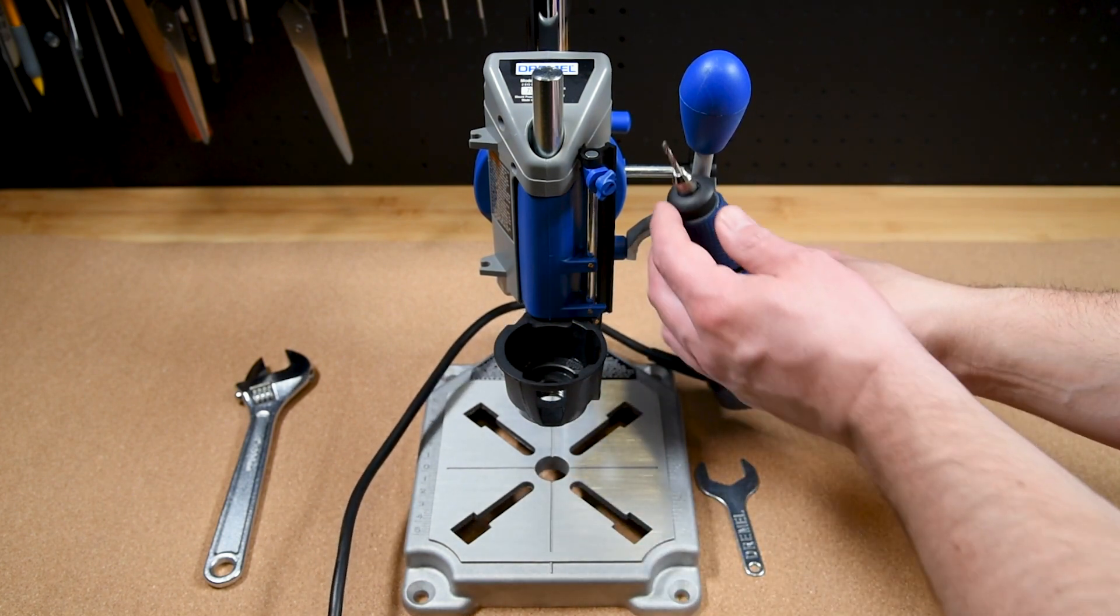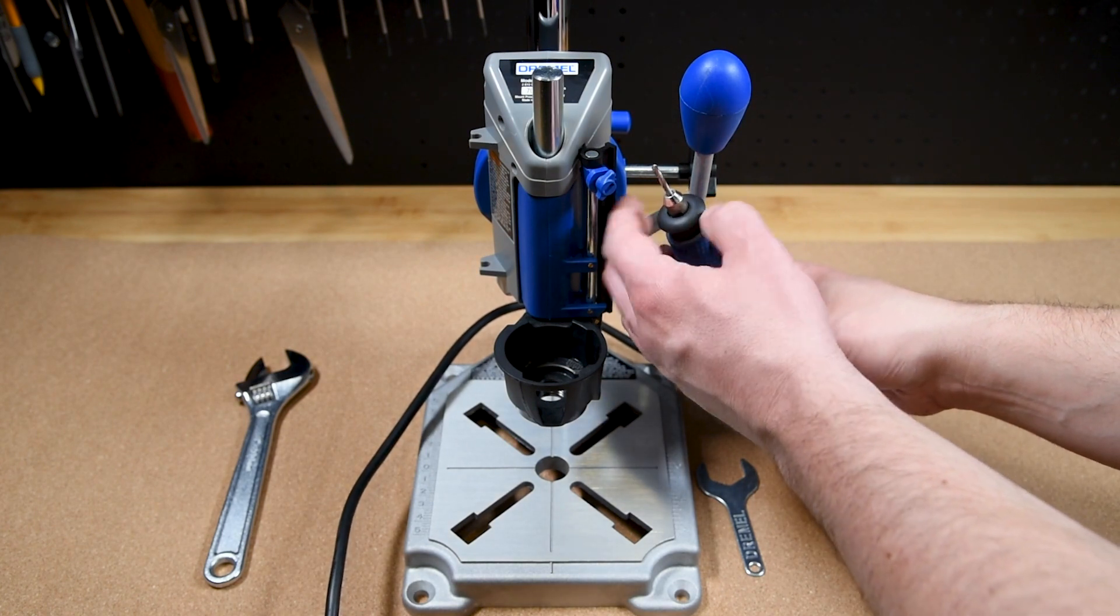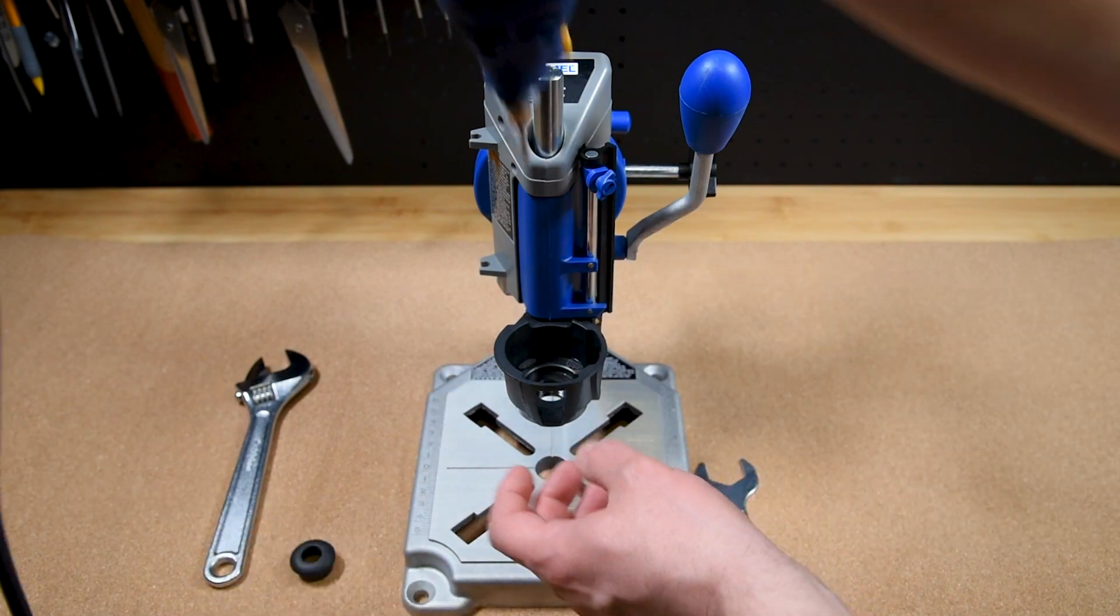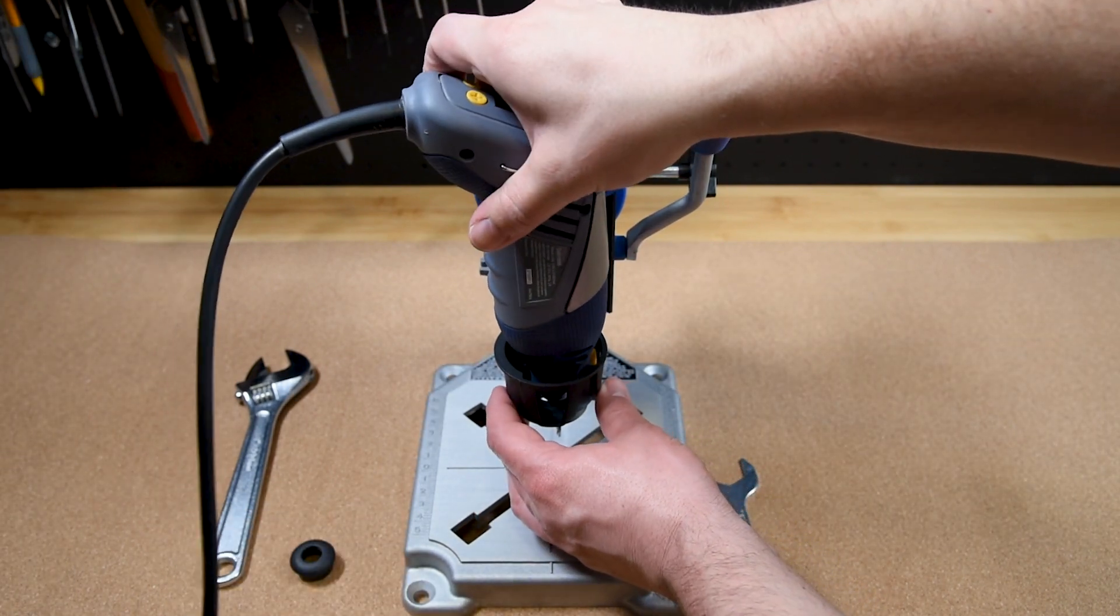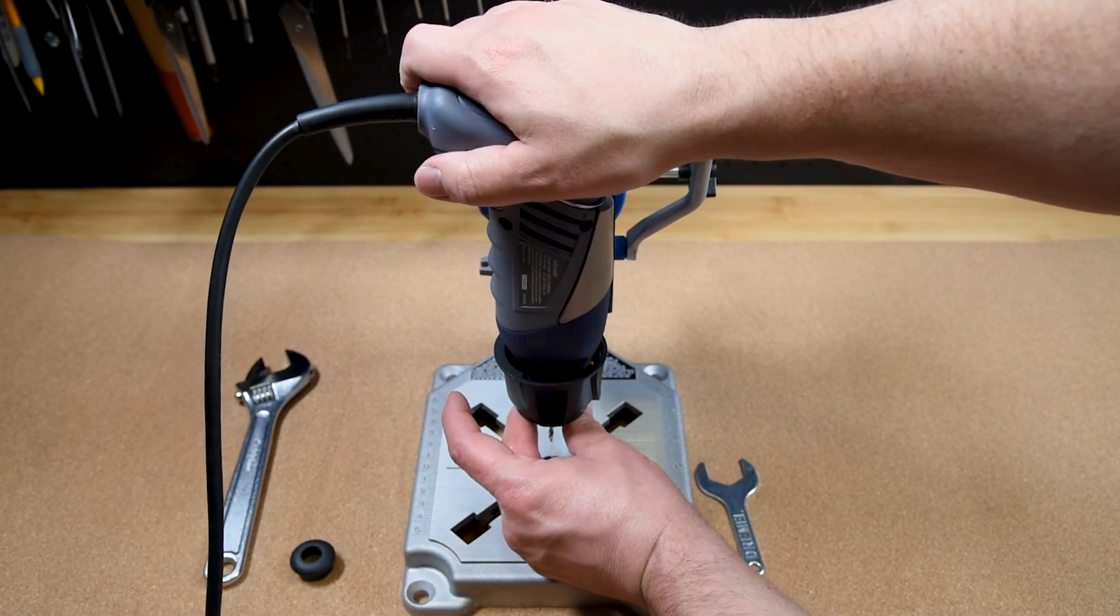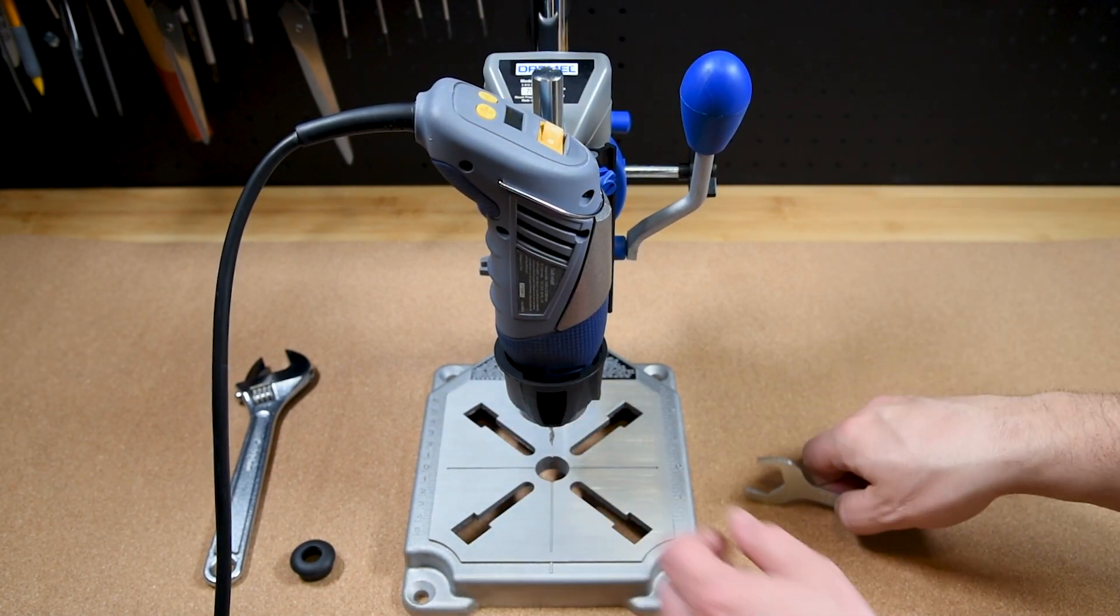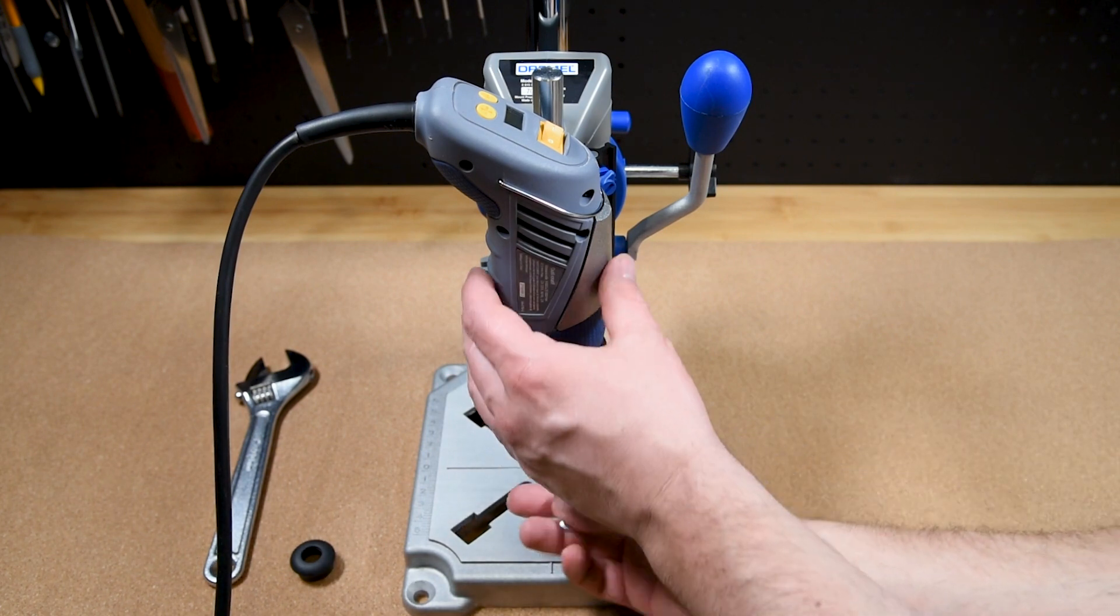Now I'll show you how to mount your multi-tool into the Dremel workstation. Simply remove the collet from your multi-tool, place your multi-tool into this plastic housing, then tighten by hand the plastic nut at the base of the housing. You can then use the provided wrench to snug the plastic bolt down tight.